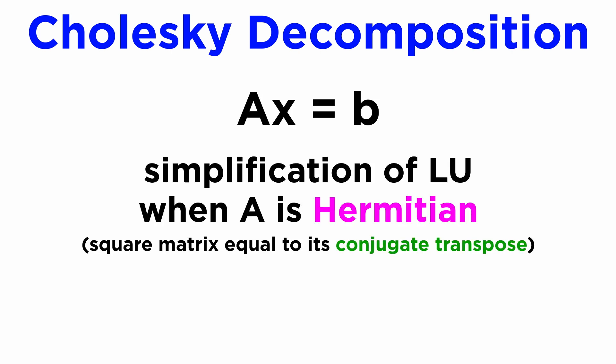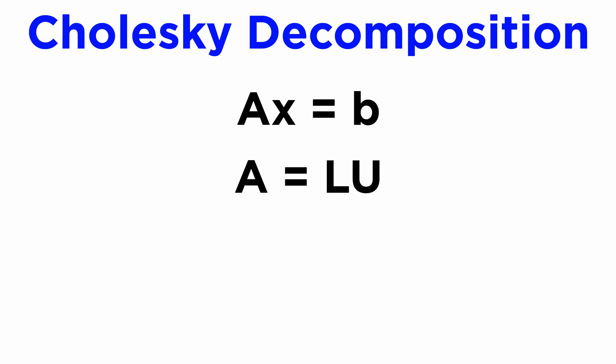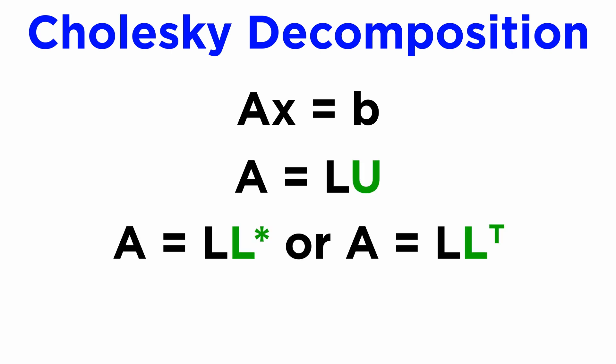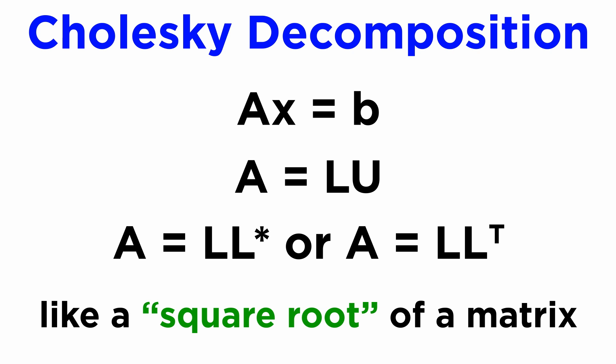Next, let's mention the Cholesky decomposition. This is a simplification of the LU decomposition that only applies when the matrix A is a Hermitian matrix, and if A is real, then this means A must be symmetric. In this case, when we do an LU decomposition of a symmetric matrix, we find that L and U are just each other's conjugate transpose, and so we only need to find one of them. Conventionally, this is written A equals L L star in general, or A equals L L transpose for real matrices. The Cholesky decomposition is often used as a sort of square root of a matrix, since the matrix L multiplied by itself transposed gives A.